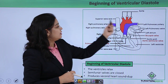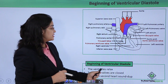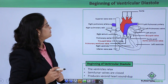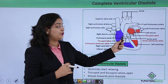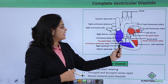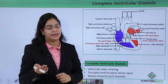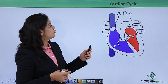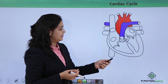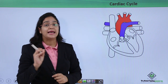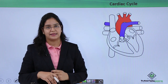In complete ventricular diastole, the ventricles fully relax and the semilunar valves remain closed. The tricuspid and bicuspid valves open to allow blood to flow from the atria to their respective ventricles, and then joint diastole occurs again — all chambers refill with blood. This completes our cardiac cycle, which has a total duration of 0.8 seconds.